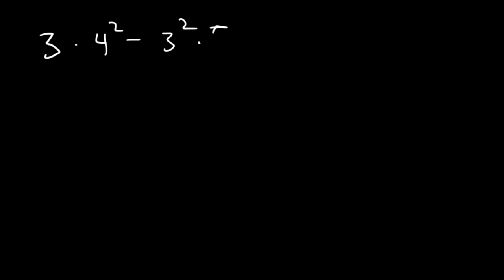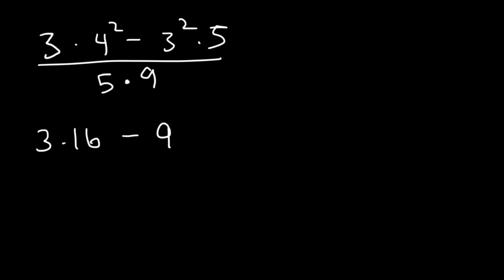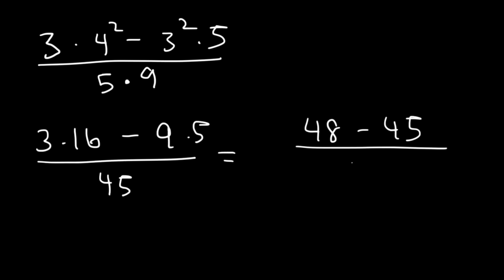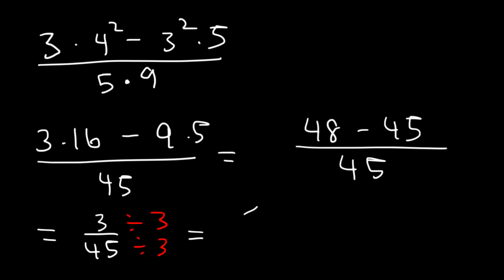Now let's move on to examples involving fractions. Try: the quantity 3 times 4 squared minus 3 squared times 5, all divided by 5 times 9. Start with the numerator — work with exponents before multiplying. 4 squared is 16, and 3 squared is 9. Then 3 times 16 is 48, and 9 times 5 is 45. 48 minus 45 is 3. The denominator is 5 times 9 equals 45. We have 3 over 45, and dividing both by 3 gives us 1 over 15.